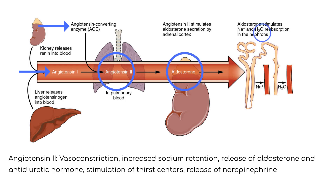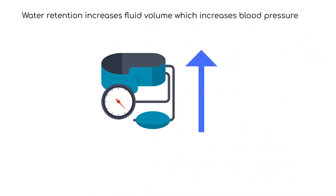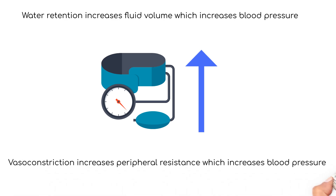Aldosterone promotes sodium retention in the kidney tubules. Water is also retained by way of osmosis in an effort to conserve fluid volume. All of these actions work to increase blood pressure. For example, water retention from aldosterone and antidiuretic hormone increases fluid volume, which increases blood pressure. Vasoconstriction increases peripheral resistance, which also increases blood pressure.